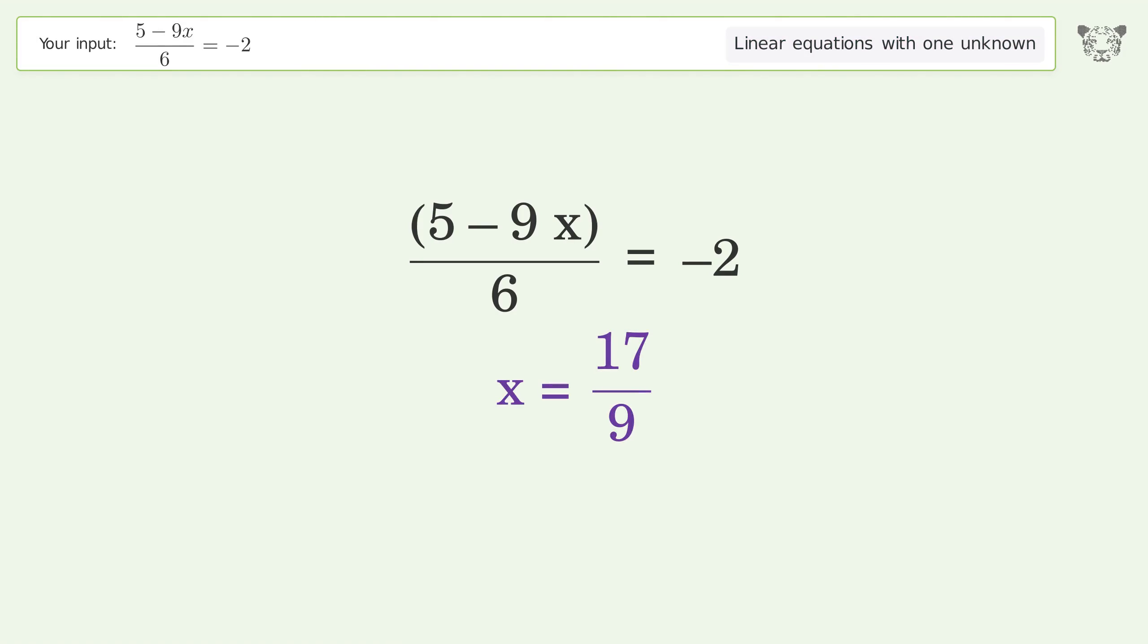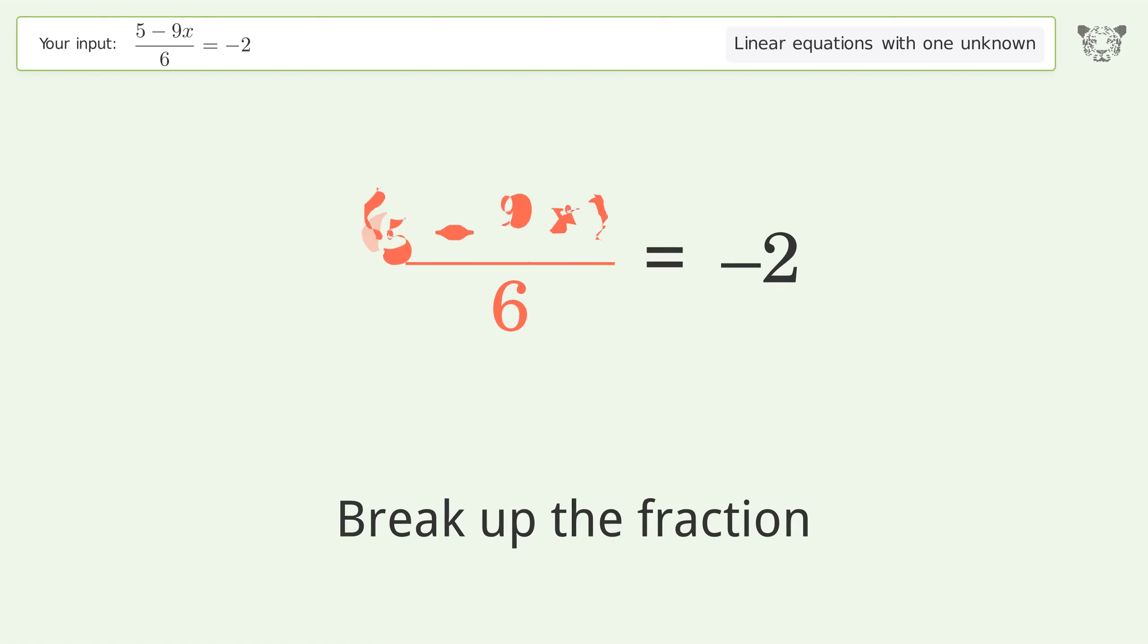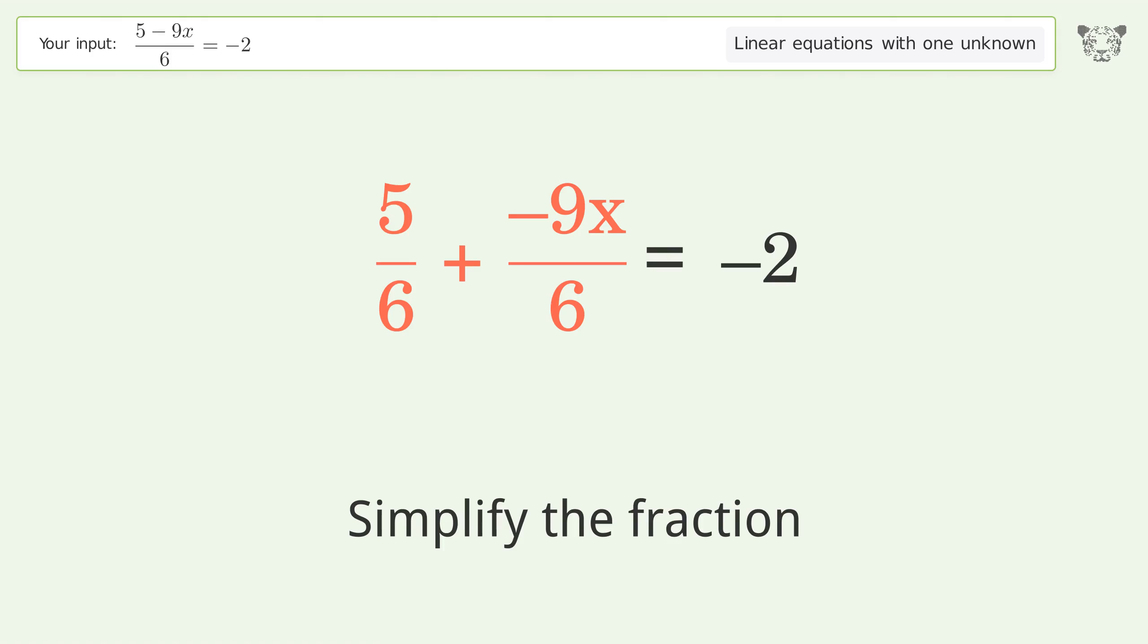You ask Tiger to solve this. This deals with linear equations with one unknown. The final result is x equals 17 over 9. Let's solve it step by step. Simplify the expression. Break up the fraction.